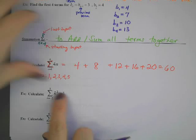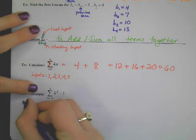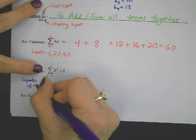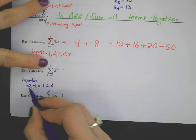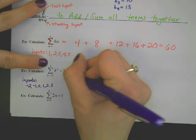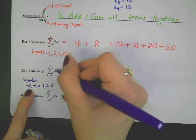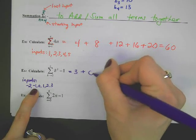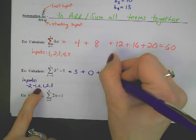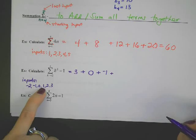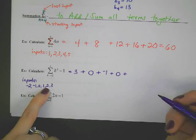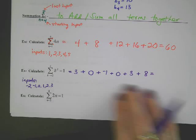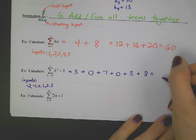Without a calculator: 8 and 12 make 20, 4 and 16 make 20, so 20 plus 20 plus 20 equals 60. Let's try another. The input doesn't start with 1 — it starts with negative 2. Inputs: negative 2, negative 1, 0, 1, 2, 3. Plug in negative 2: negative 2 times negative 2 is positive 4, minus 1 is 3. Plug in negative 1: that's 0. Plug in 0: negative 1. Plug in 1: 0. Plug in 2: 3. Plug in 3: 9 minus 1 is 8. Don't forget to sum — add them together and get 13.